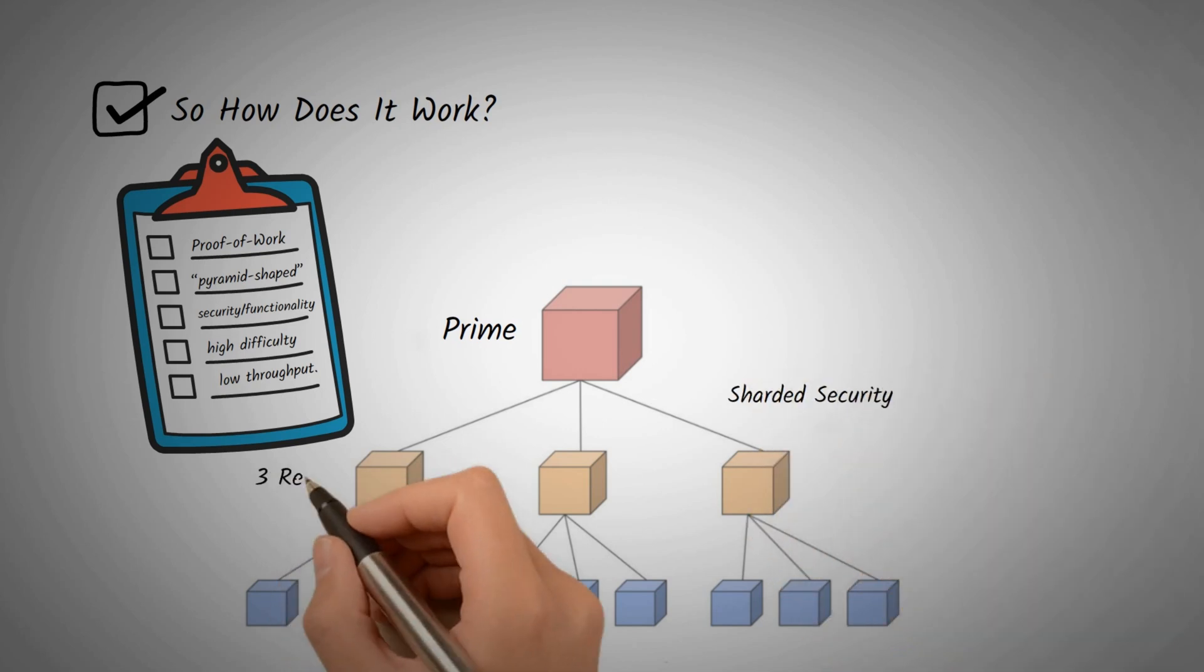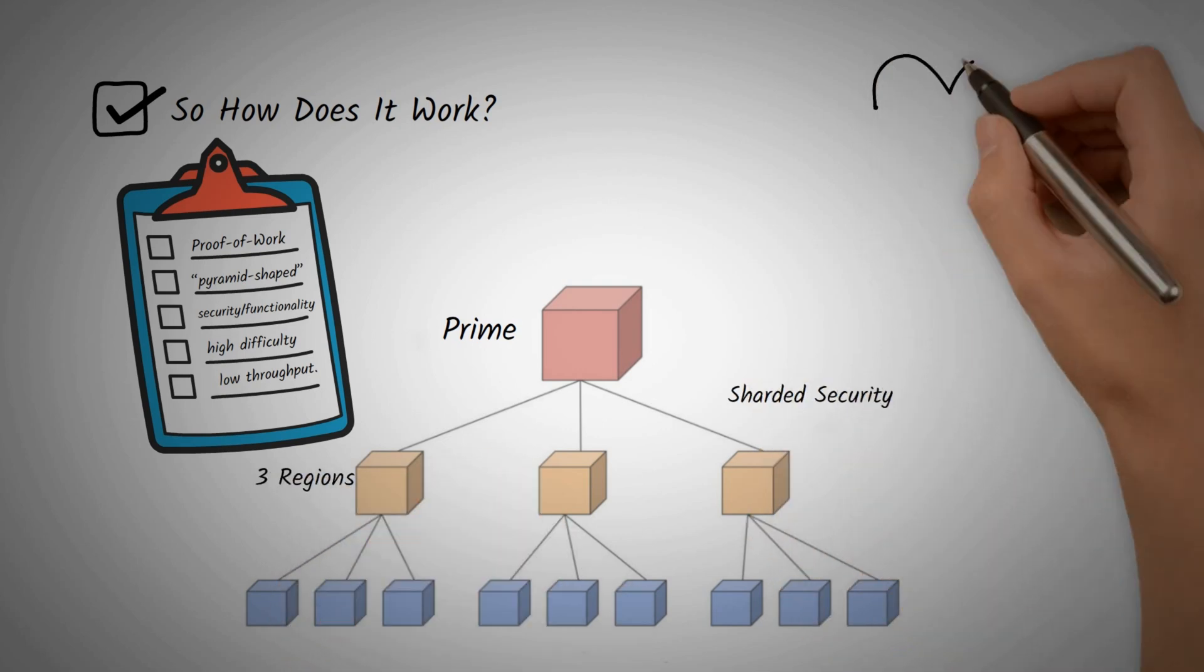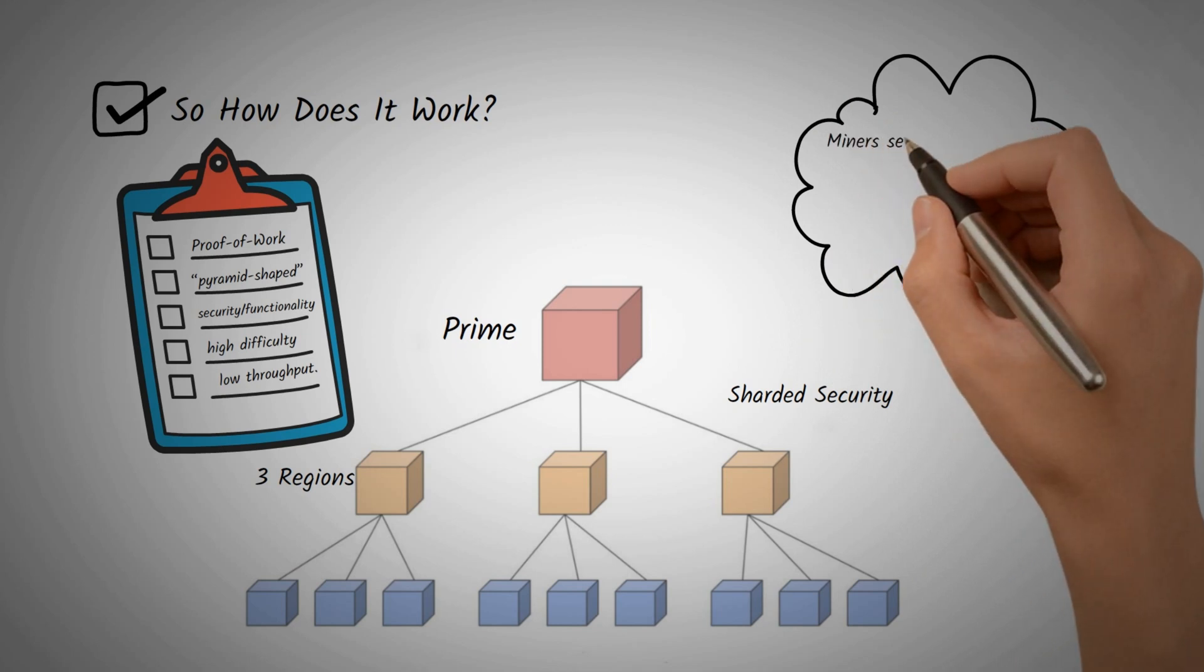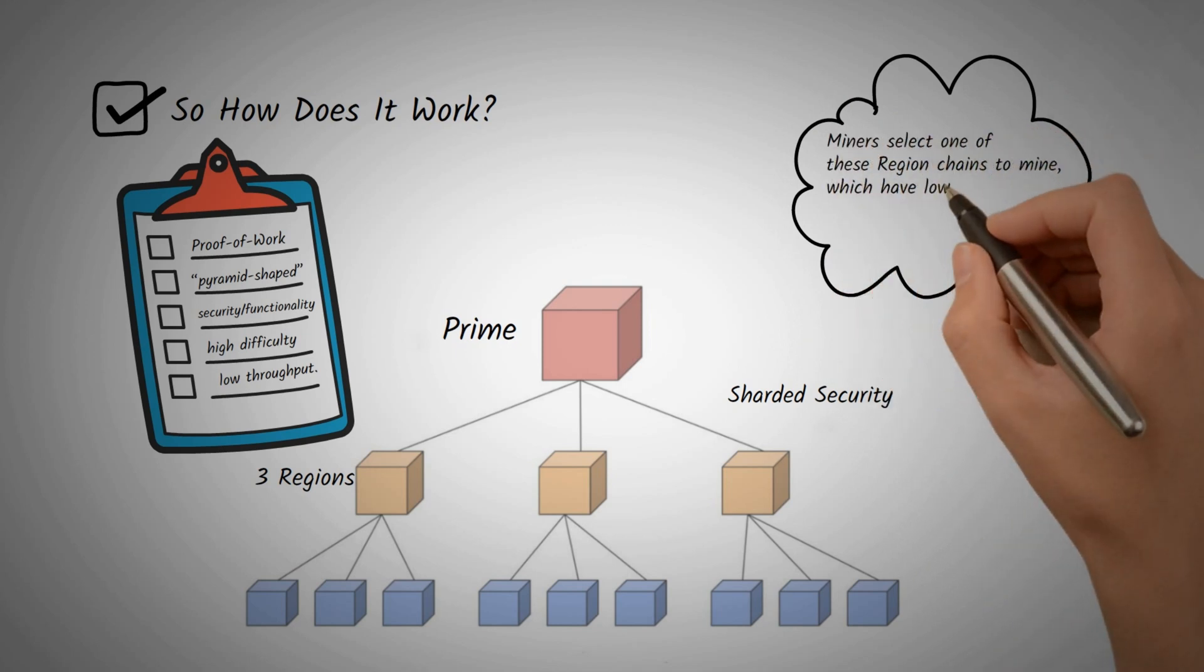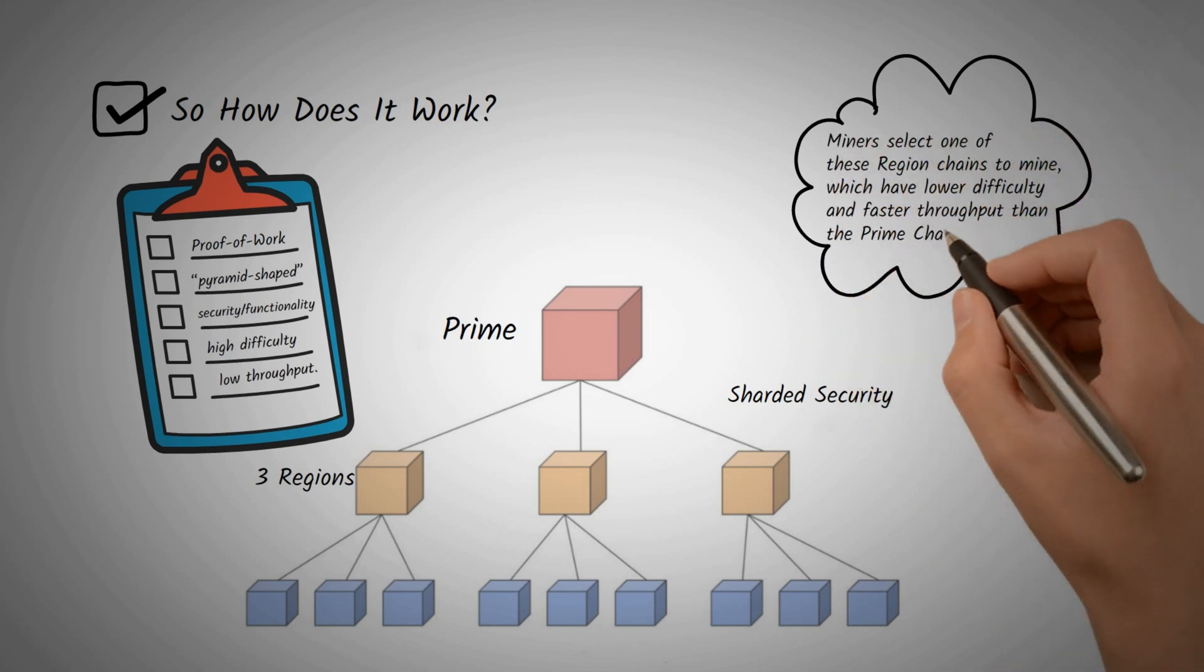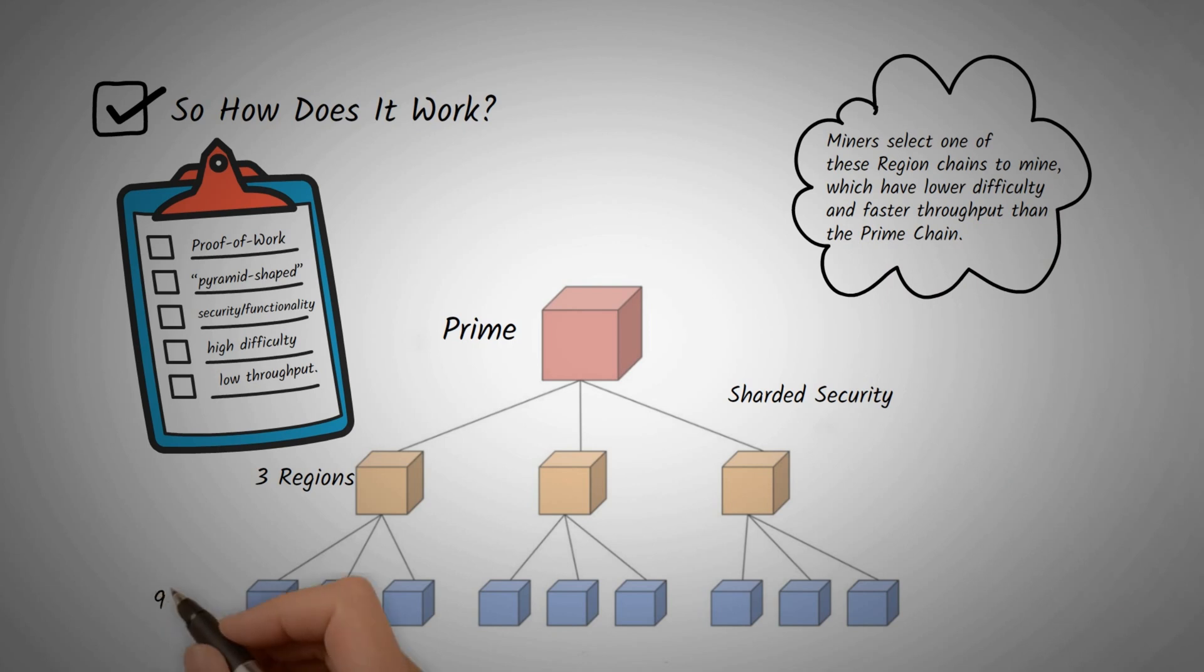In its current state, Quai Network has three region chains subordinate to the Prime Chain. Miners select one of these region chains to mine, which have lower difficulty and faster throughput than the Prime Chain.